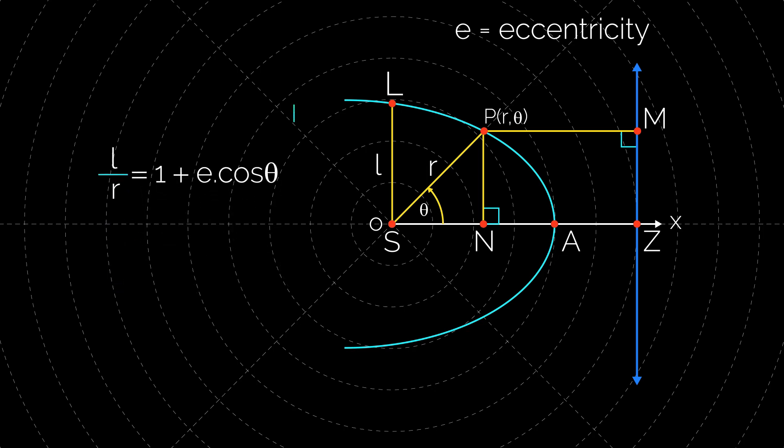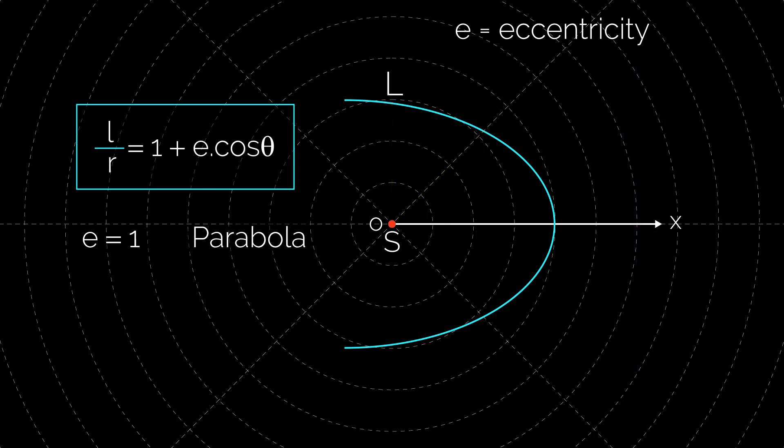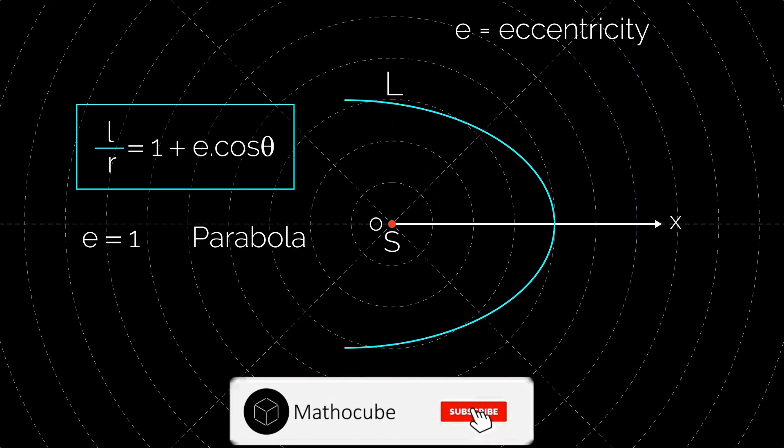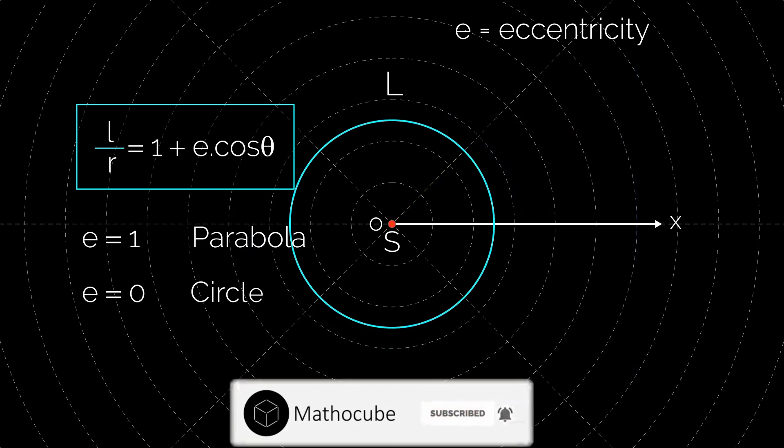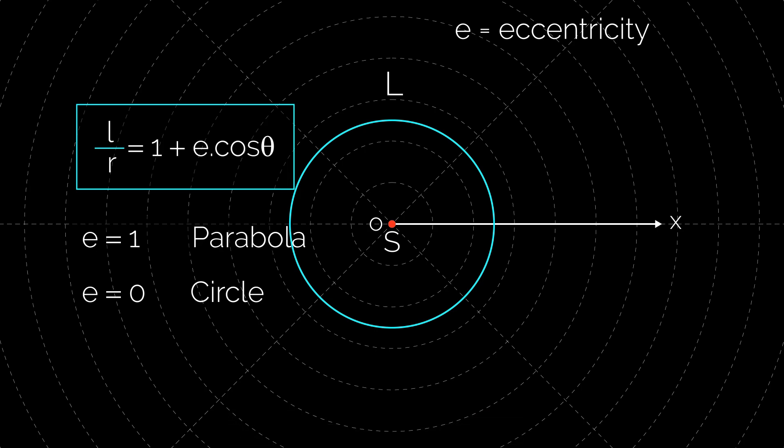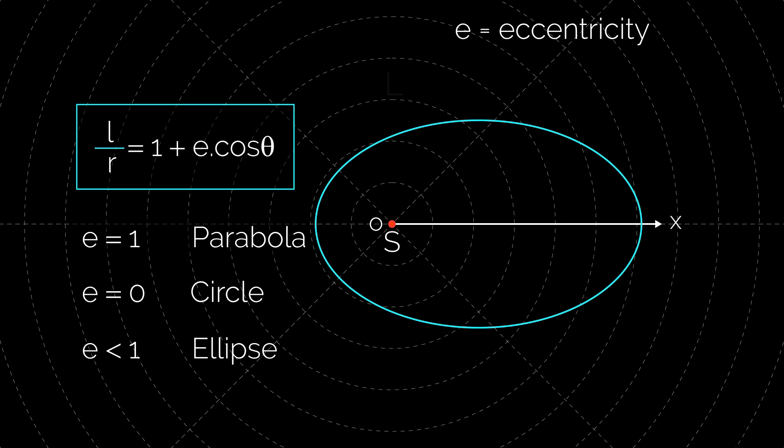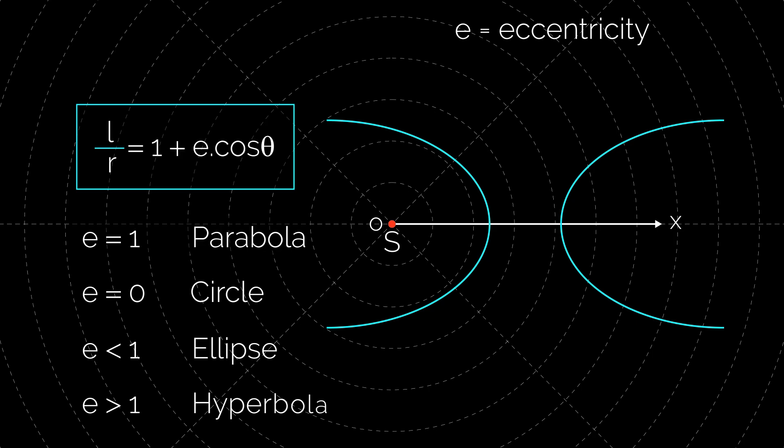This is the general equation of conic. If e = 1, then this is the general equation of parabola. If e = 0, then this is the general equation of circle. If e < 1, then this is the general equation of ellipse, and if e > 1, then this is the general equation of hyperbola.